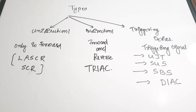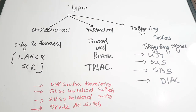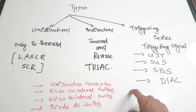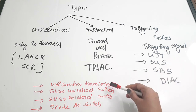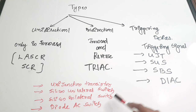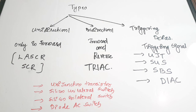The third type of thyristor is the triggering device. These require a triggering signal or control signal to turn on the device — that is, to take it from a non-conducting state to a conducting state. Examples are the UJT (Uni-Junction Transistor), SUS (Silicon Unilateral Switch), SBS (Silicon Bilateral Switch), and DIAC (Diode AC Switch).